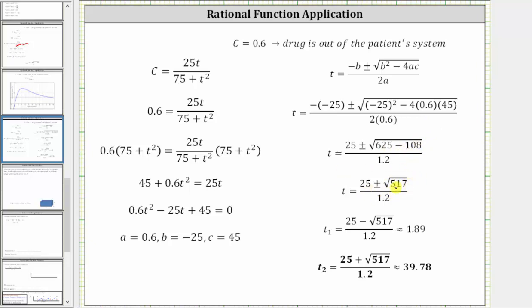625 minus 108 is 517, so we have two times. One time is the quantity 25 minus the square root of 517 divided by 1.2, and the other time is 25 plus the square root of 517 divided by 1.2.